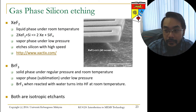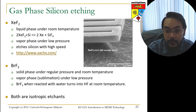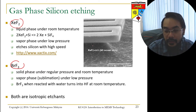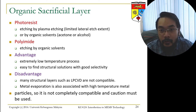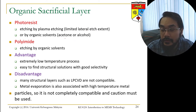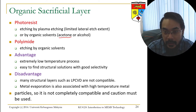For gas phase silicon etching, instead of using hydrofluoric acid, you can use gases such as xenon fluoride or bromine fluoride — both are isotropic etching, meaning etching occurs in all directions equally. Organic sacrificial layers such as photoresist can be removed by plasma etching for a dry process, or by a suitable solvent. Acetone is a universal solvent that can remove almost all types of photoresist.